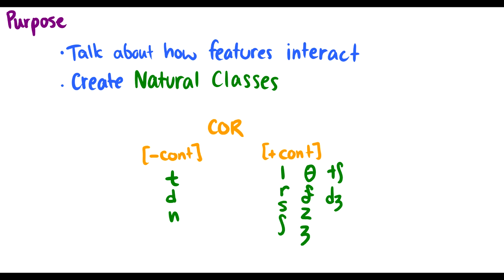So the purpose of features. We want to talk about how these features interact. How do these sounds interact with each other in other environments? And two, we want to create these natural classes. So a natural class is where we have a bunch of sounds and there's only one feature that distinguishes them from their other counterparts. So for instance, if we take a look at coronal sounds, which are sounds made in the alveolar region or the alveopalatal and the palatal region of your mouth, we have T, D, and N, which are all minus continuance, meaning there's no continuous airflow. Well, all these other sounds have continuous airflow.